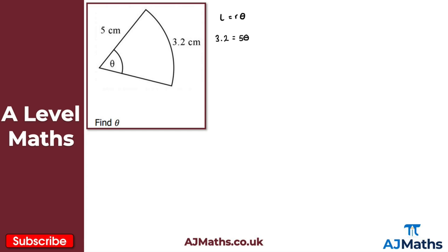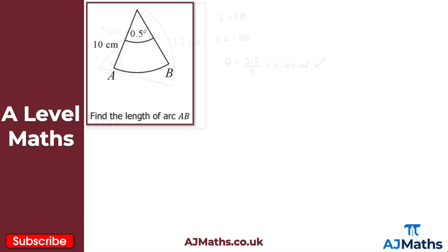To make theta the subject, we divide both sides by 5: theta = 3.2 divided by 5, which gives 0.64 radians. That's the solution to question two.